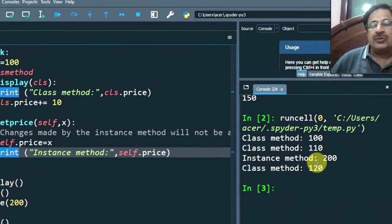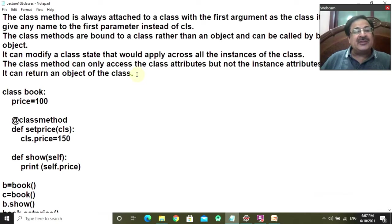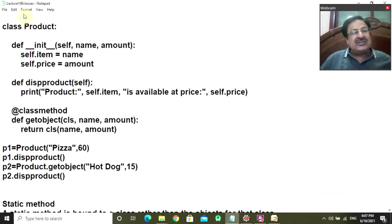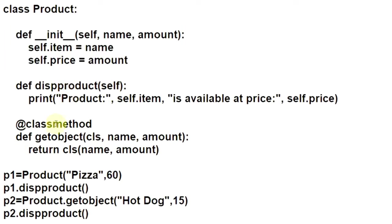I have written comments to make it very clear — 'changes made by the instance method will not be applied to the class attribute.' I have written it for your better understanding. Now, to understand the point that a class method can return an object, we will look at this program. This is the class Product. It has a parameterized constructor, an instance method, and a class method. I assume you have seen my earlier lecture, lecture 16, where I explained classes and the concept of default and parameterized constructors. If you haven't, I am providing the link in the description box.